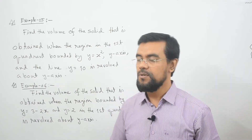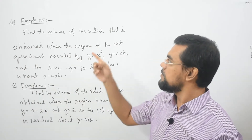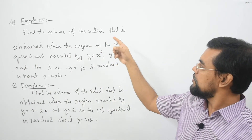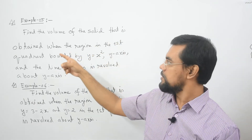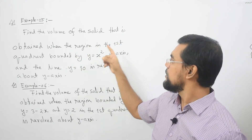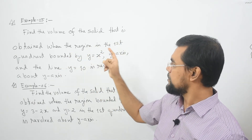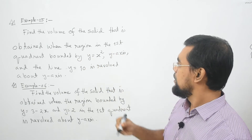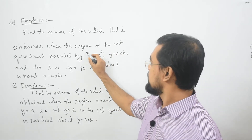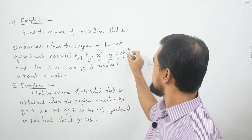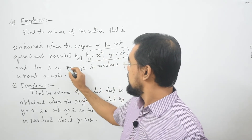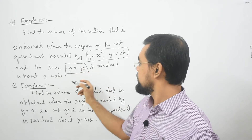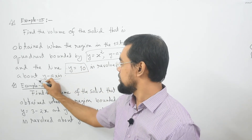So now let us try to solve example 5. It says find the volume of the solid that is obtained when the region in the first quadrant bounded by y equal to x square, the y-axis, and the line y equal to 10 is revolved about the y-axis.